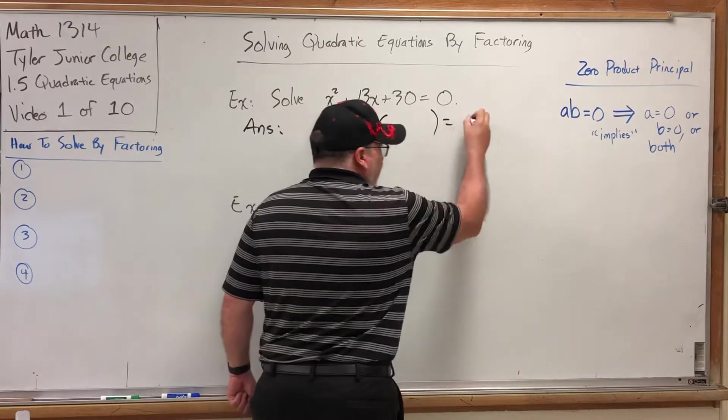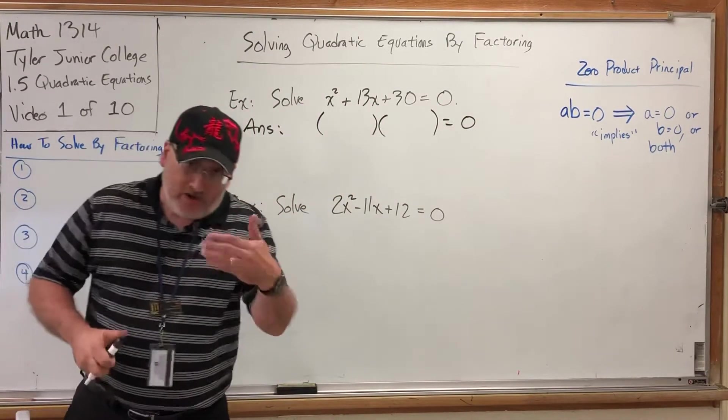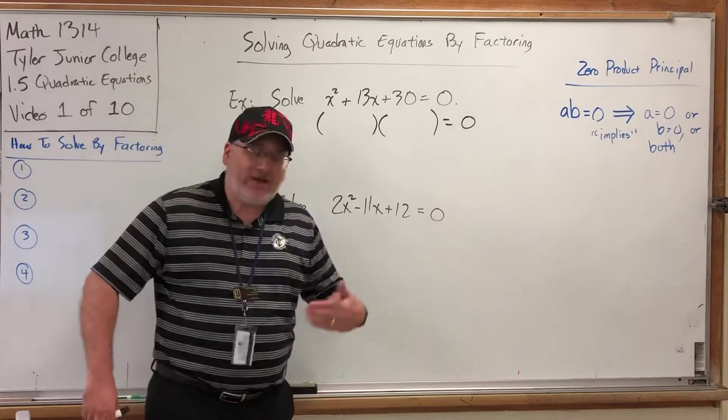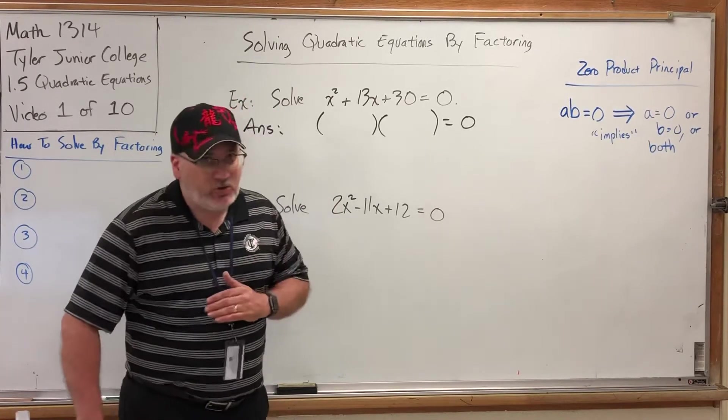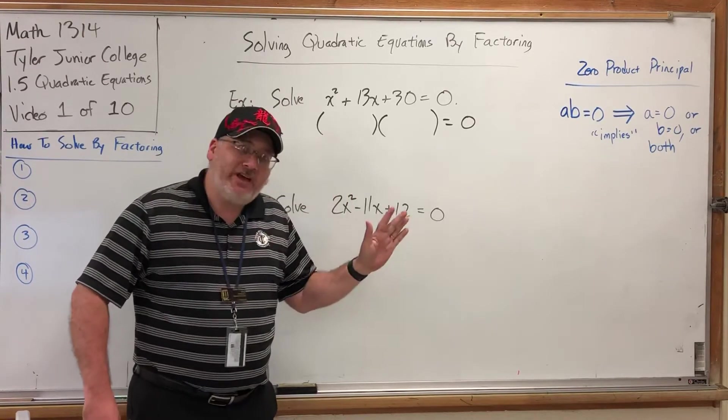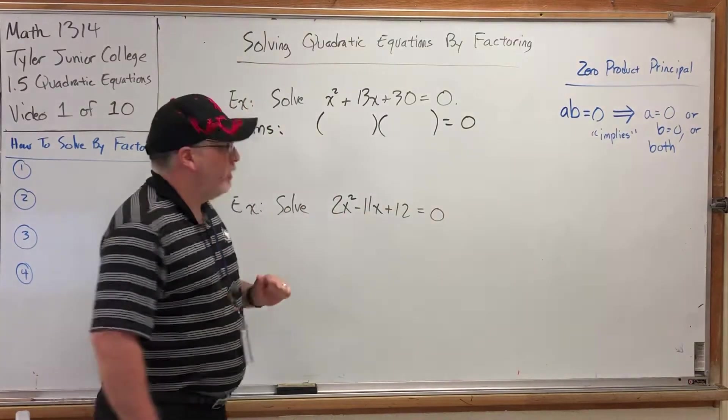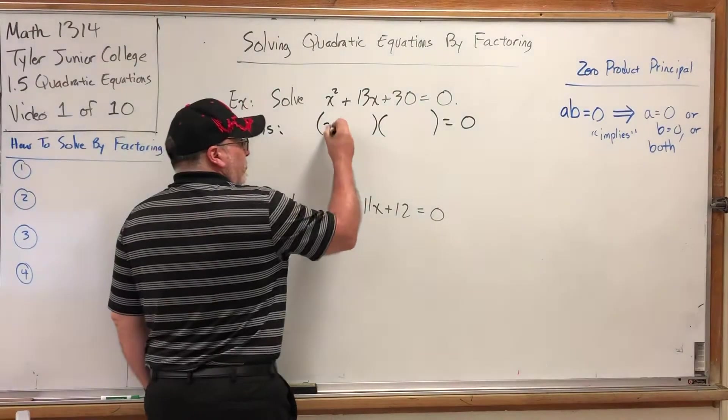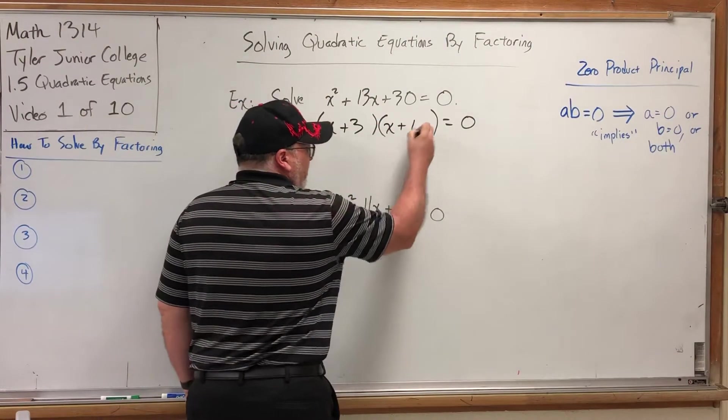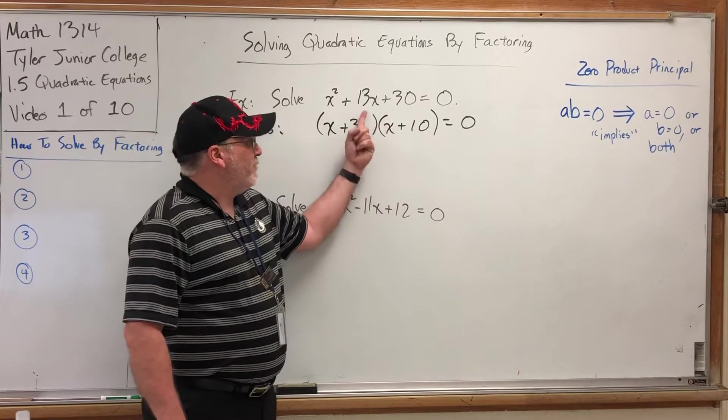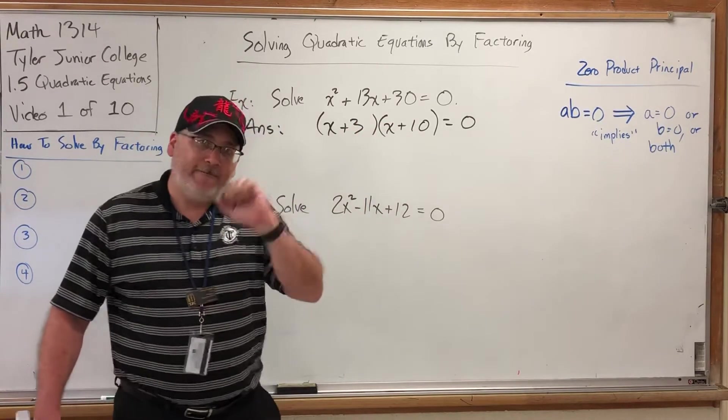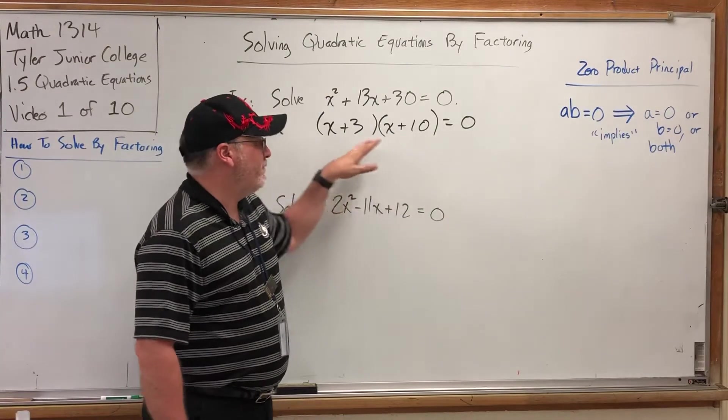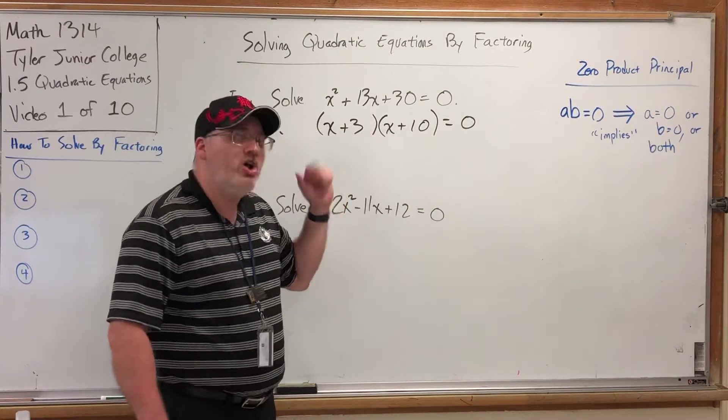So watch what happens if we take this trinomial and factor it. Now, here comes the factoring skills I was alluding to, skills that, in theory, you already have coming into a college algebra class, but in reality, a lot of people don't. If you need to review factoring, please watch the series of videos reviewing factoring. It will shed all the details on all the factoring techniques you will see in this video and the next one. So what does x squared plus 13x plus 30 factor into? Well, if you were to unfoil it, it would factor into x plus 3 and x plus 10. The short reason why? 3 plus 10 have a sum of 13, but 3 times 10 has a product of 30. Foil it out if you need convincing.